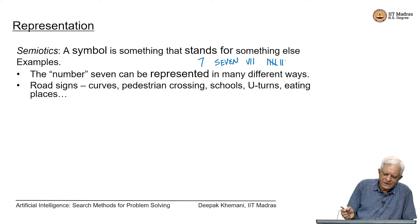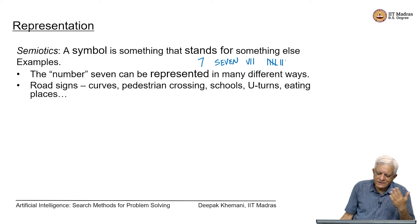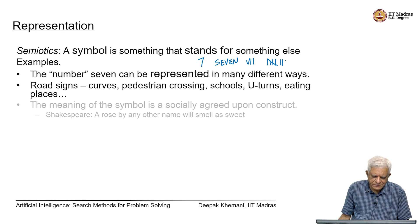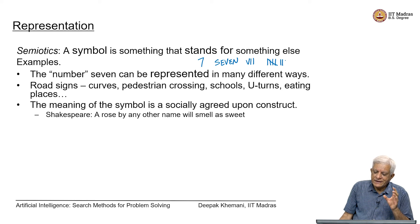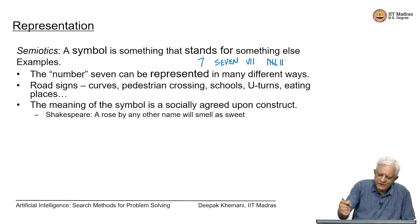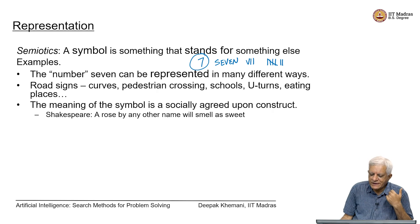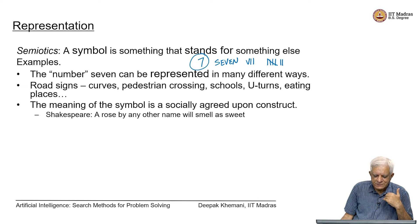Numbers are not the only symbols we use. Road signs — curves, pedestrian crossing, schools, U-turns, eating places — when driving you see these signs and they represent something for us. The meaning of a symbol is a socially agreed upon concept; there is nothing intrinsic about the meaning of a symbol. When we draw a symbol for the number 7, there is nothing inherent that says it represents 7 — it is a socially agreed upon construct.